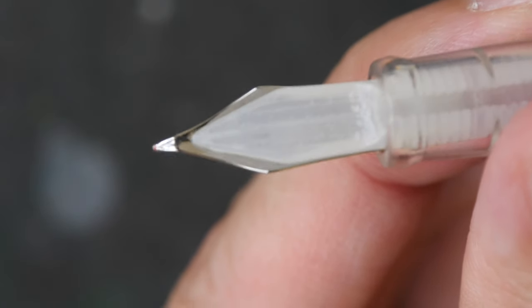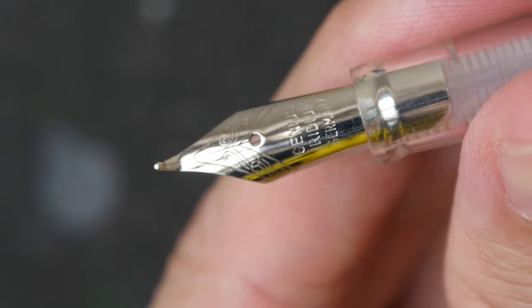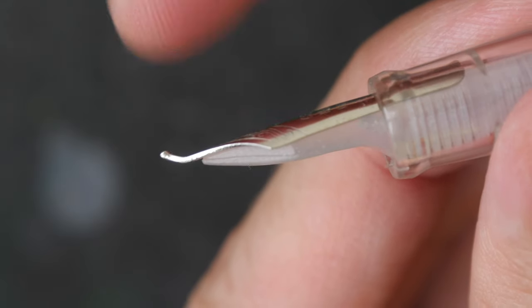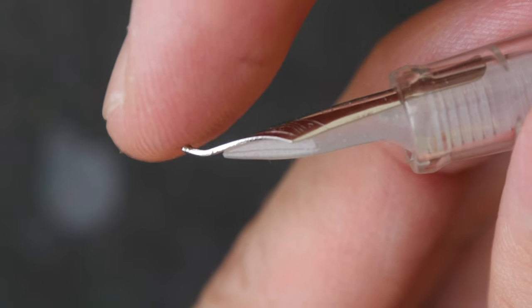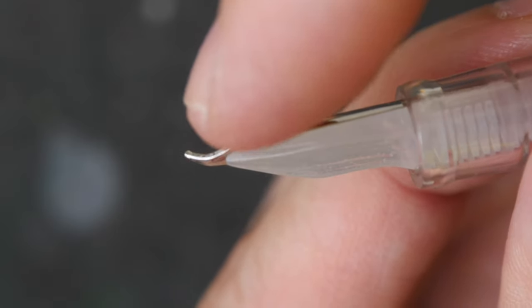But it can also be used for drawing because it's quite a versatile nib. You can produce thin lines by drawing with the tip, and you can produce very thick lines by drawing with the bent area there. I'll show you later on.